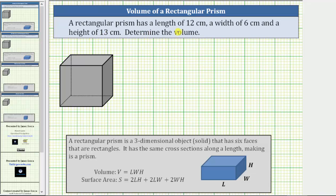A rectangular prism has a length of 12 centimeters, a width of 6 centimeters, and a height of 13 centimeters. Determine the volume.